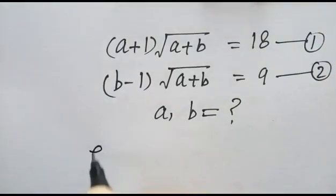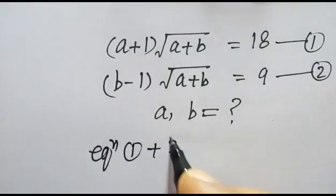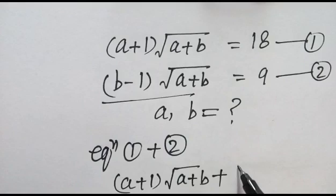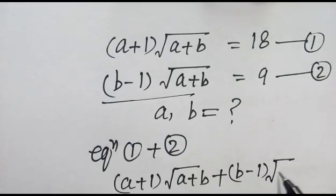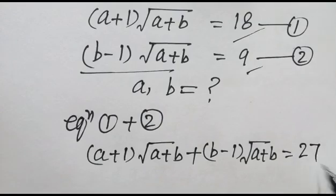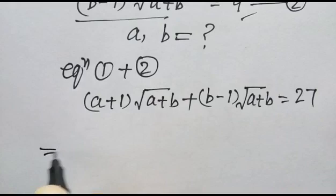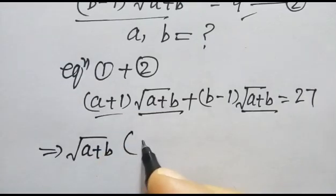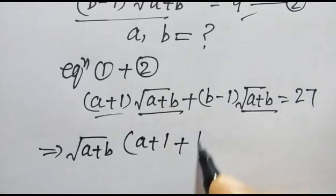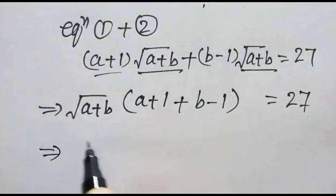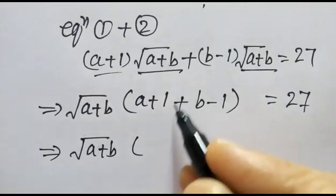So let's start by adding equation 1st and equation 2nd. So A plus 1 times square root of A plus B, plus B minus 1 times square root of A plus B, is equal to 18 plus 9, which is equal to 27. Now taking square root of A plus B common.